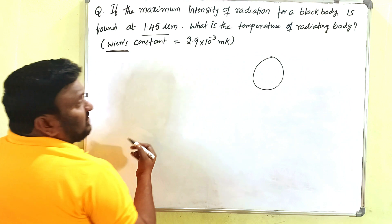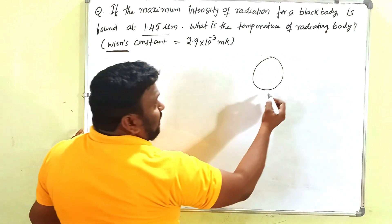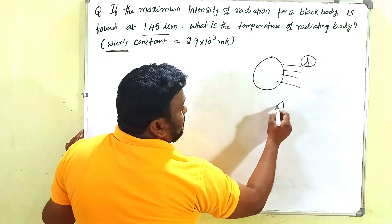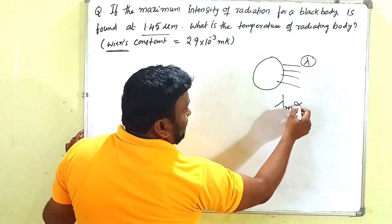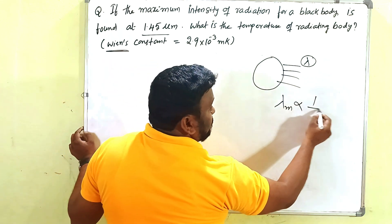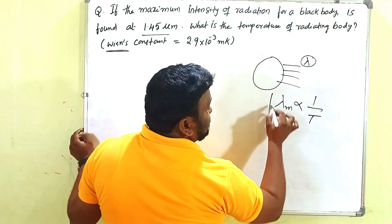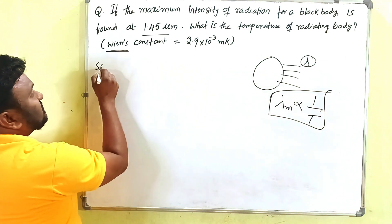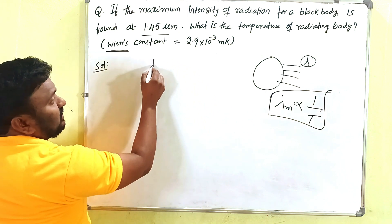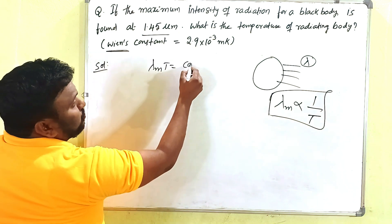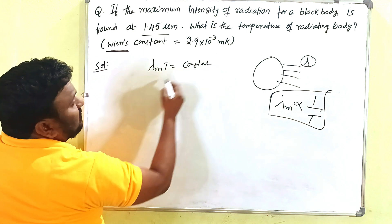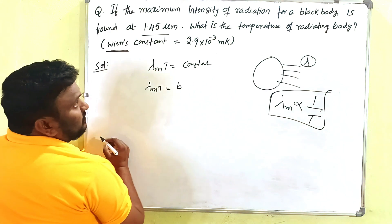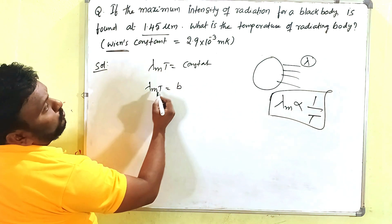A black body emits energy having some wavelength lambda. The maximum wavelength emitted by the black body is inversely proportional to the absolute temperature. This is what we call Wien's displacement law: λ_m × T = constant, which we write as λ_m × T = B.